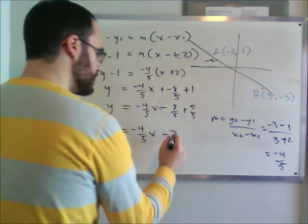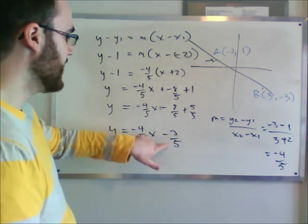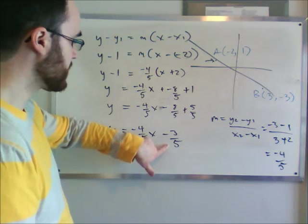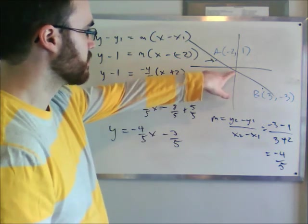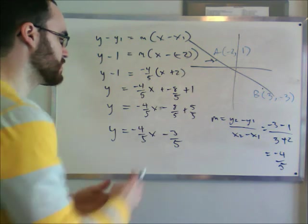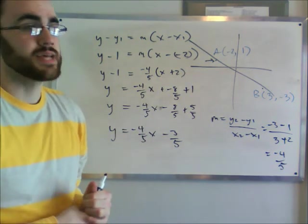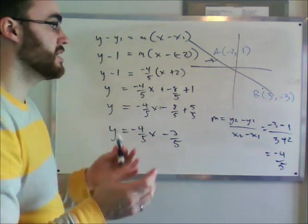So our intercept, our y-intercept, is actually -0.6, right there. So it was hard to guess what it was, but through this formula we found it. So that's how you solve for equations of lines on graphs with two points given.